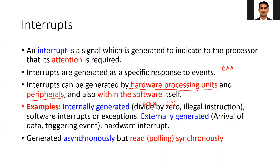All interrupts can be generated synchronously or asynchronously — that means they can be generated at any time. However, their processing will start only synchronously. For example, if the interrupt is generated at a certain point in the clock cycle, the processor will start processing it only at the next positive edge. So there will be some non-zero delay between when the interrupt is received and when it starts being processed by the processor.